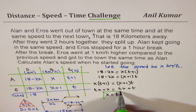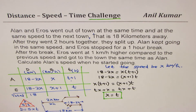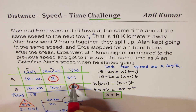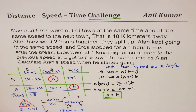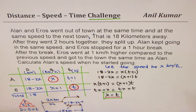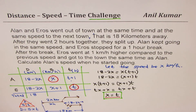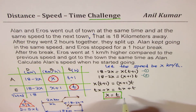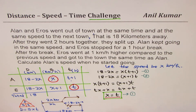So we get that the speed x and the time t are actually the same value. Now in our equation we can substitute x equals t and solve. I'll call this equation one and the other equation two. Substituting t for x in equation one will let us solve for x.